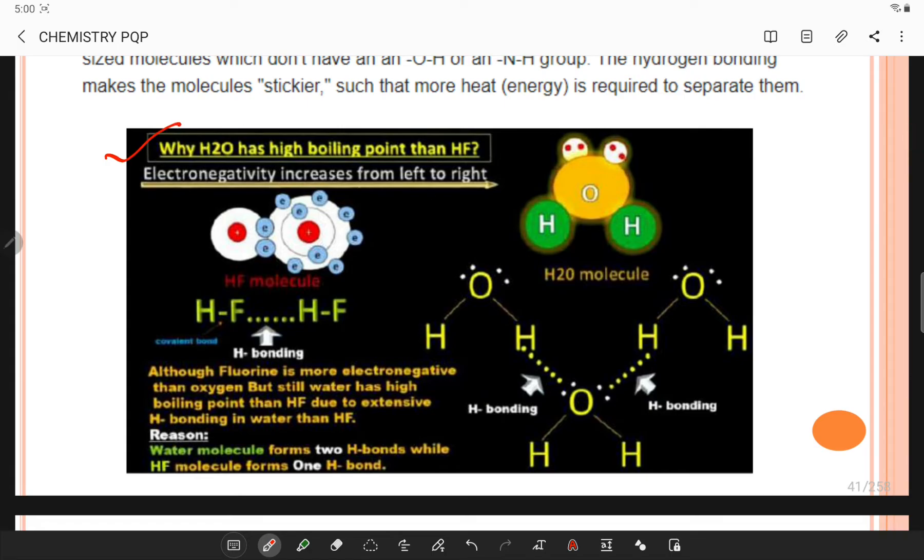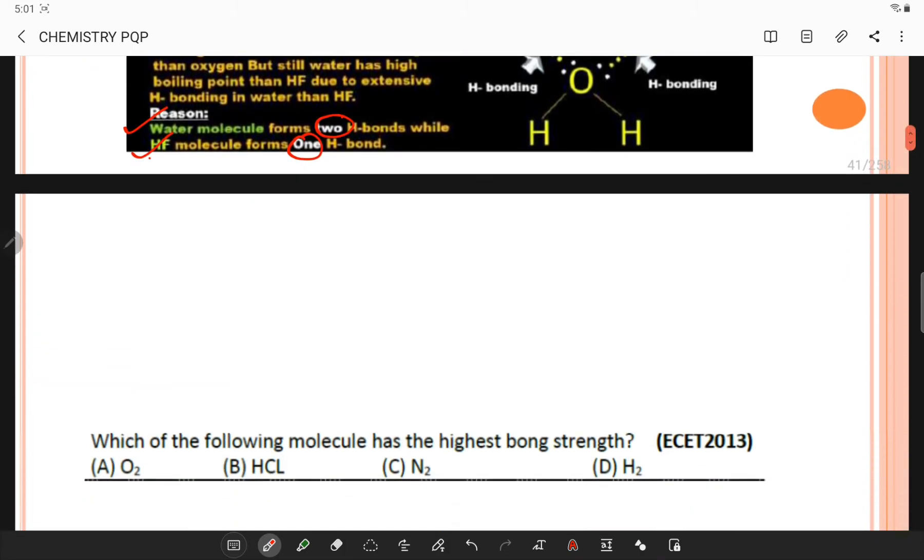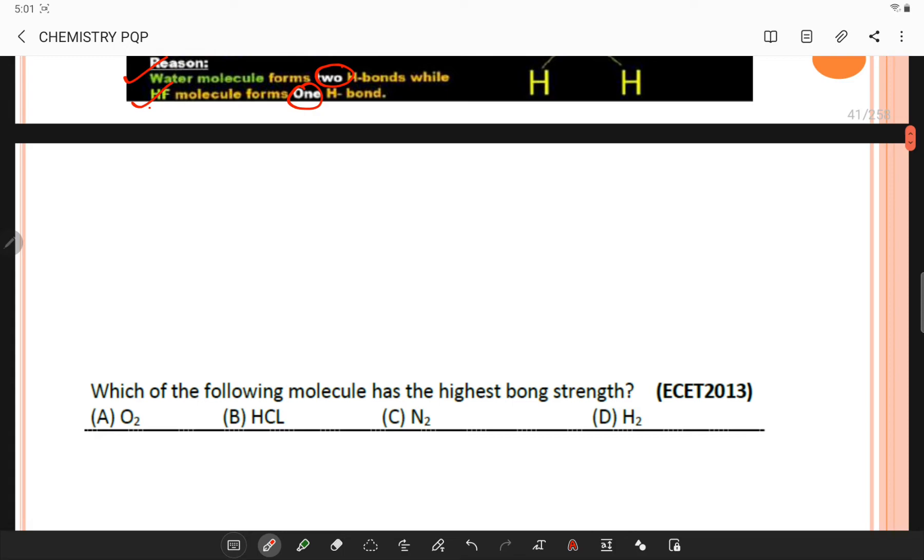This is the explanation for why hydrogen has higher boiling point - electronegativity will be increasing from left to right. Water has two OH bonds whereas hydrogen fluoride will have only one hydrogen bond. The next question: Which one of the following molecule has the highest bond strength?